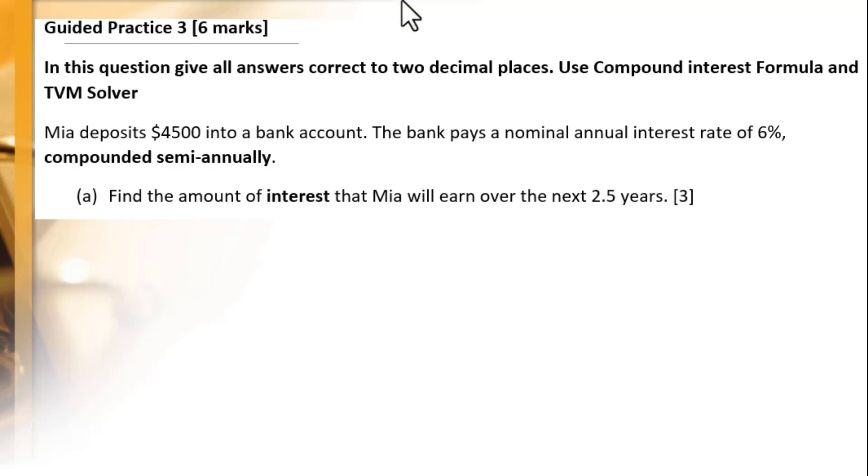This video is about review for topic 1. In this question give all answers correct to two decimal places. Use a compound interest formula and TVM solver. Mia deposits $4,500 into a bank account. The bank pays a nominal annual interest rate of 6% compounded semi-annually. Find the amount of interest that Mia will earn over the next 2.5 years.